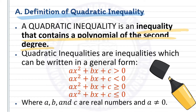Where a, b, c are real numbers and a must not be equal to 0. And remember, a solution of a quadratic inequality in x is any set of values of x for which the inequality is true.